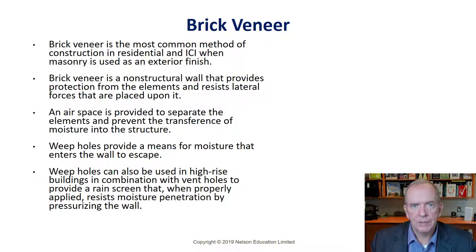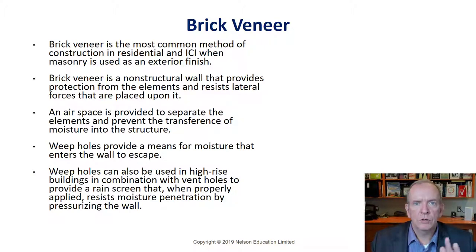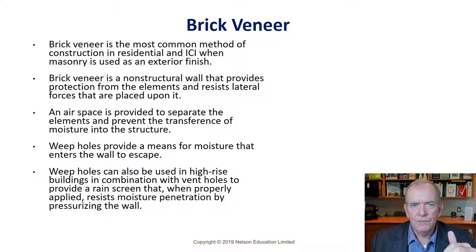We'll discuss elements of brick veneer including the airspace — a separation between the brick and the interior framing. This is a space of one inch minimum, or 25 millimeters, according to the building code. We call it an airspace because it allows air to circulate between the brick and the framing members. The framing carries a moisture barrier — or better termed a building paper or Tyvek-type air barrier — to protect against moisture penetration into the framing members.